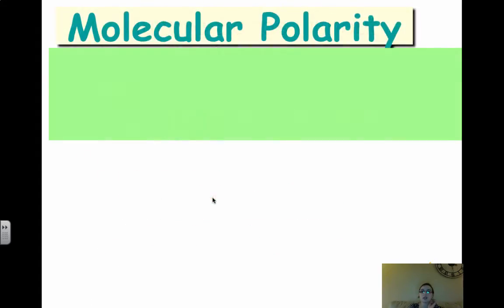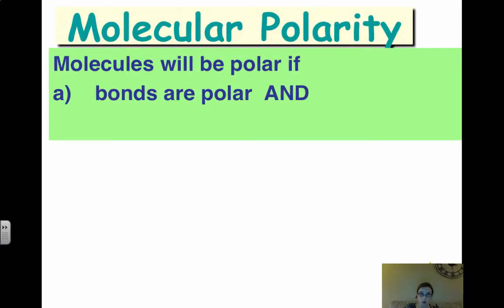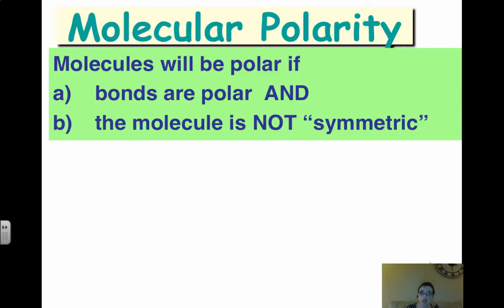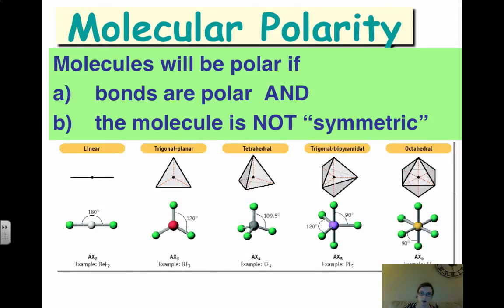So that is drawing our Lewis structures. Now we're just going to quickly look at molecular polarity. And we're going to come back to this when we look at shapes. So molecules, the overall molecule will be polar if your bonds are polar and the molecule is not symmetric. If the molecule is symmetric, it's going to be nonpolar. So if you have a symmetric molecule, that will be nonpolar. However, if it's not symmetric, then we can consider polarity.